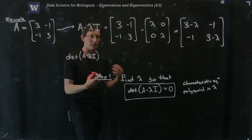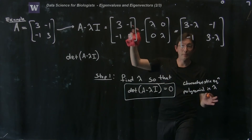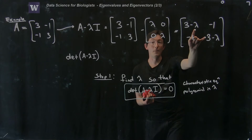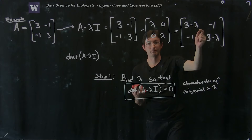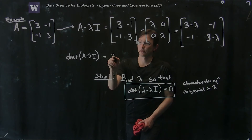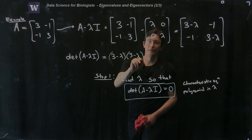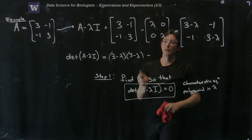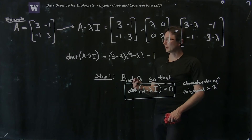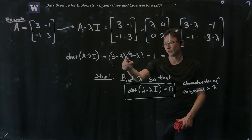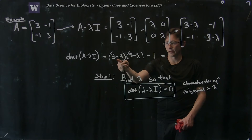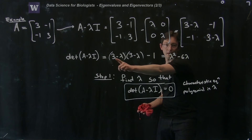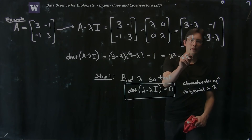For a 2 by 2 matrix, the determinant is simple — multiply the diagonal elements minus the product of the off-diagonal elements. So we have (3-λ)(3-λ) minus (-1)(-1), which is minus 1. Expanding this out, we get lambda squared minus 6 lambda, plus 9, minus 1, so plus 8 altogether. And remember, I'm trying to get this determinant equal to zero.